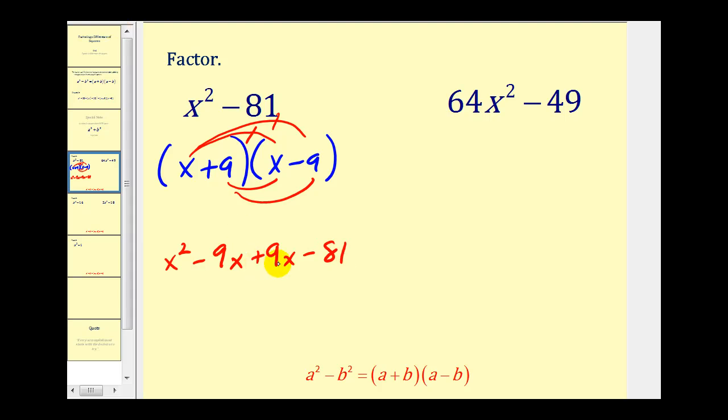Notice the middle terms are opposites, and so this does check, we have x² minus 81. This shows why one has to be a sum and one has to be a difference. This results in two terms being opposites, giving us the difference of squares.